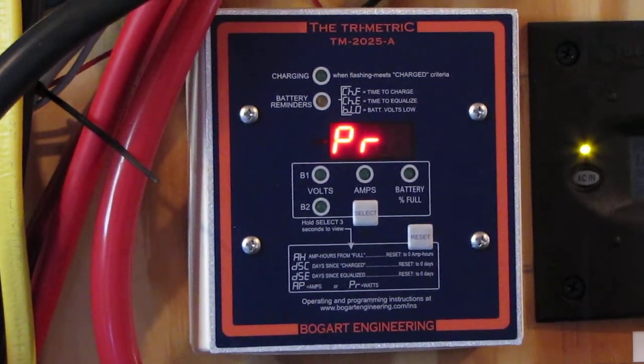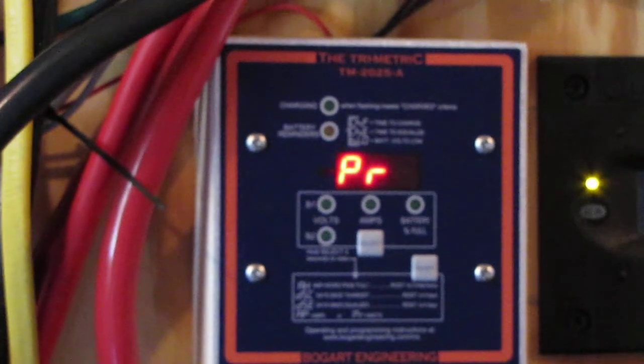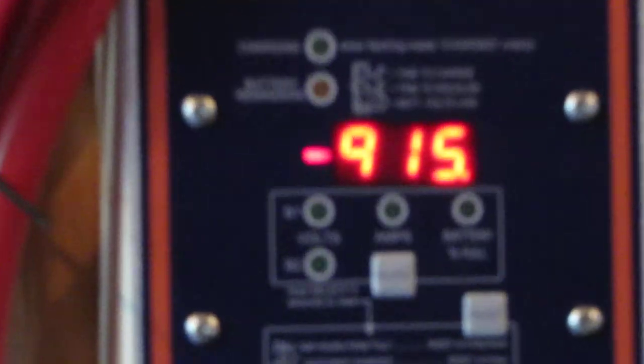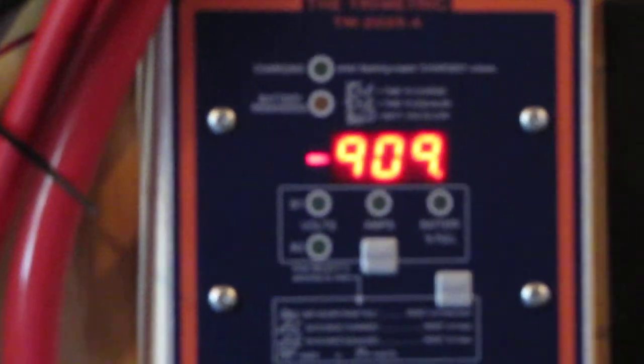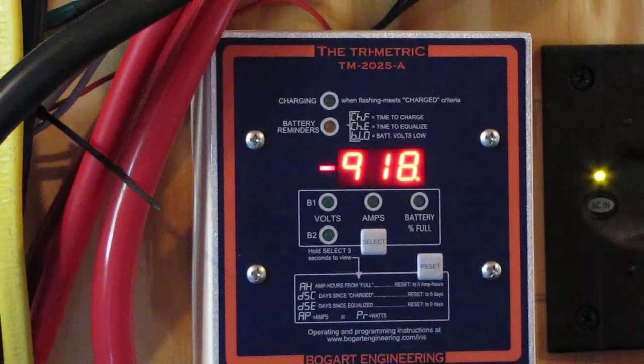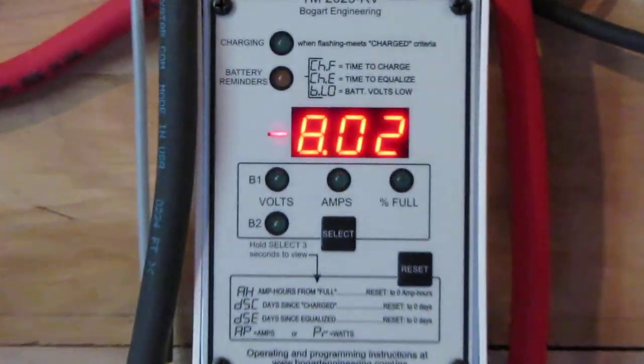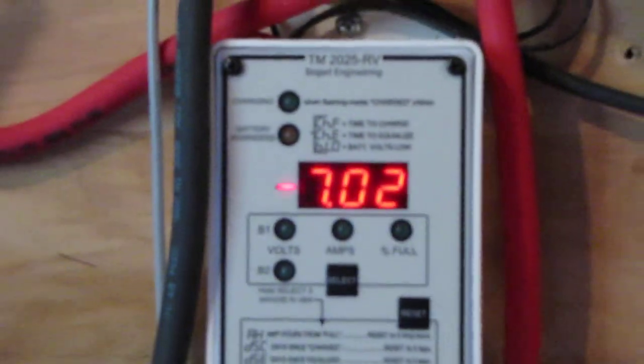And you know, it'll show you the amps, everything, everything you know. That's a bigger board, that's a Tri-metric, but our Tri-metric 2025-A. And this is a Bogart 2525-RV. Let's see we get in there, yeah, there we go.